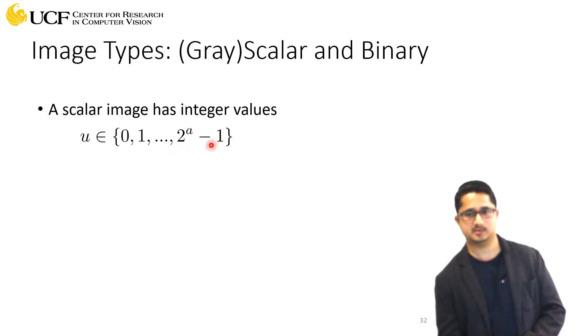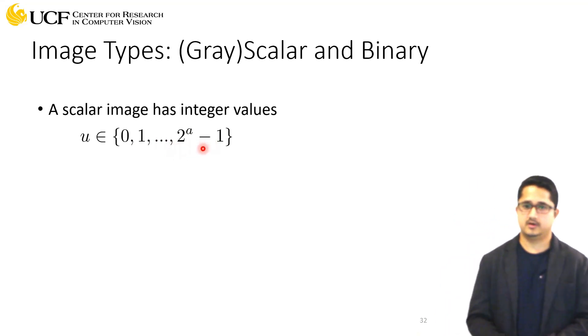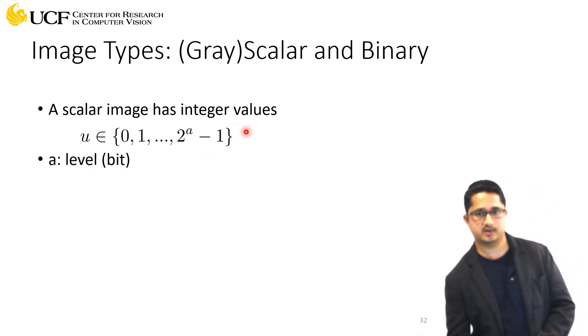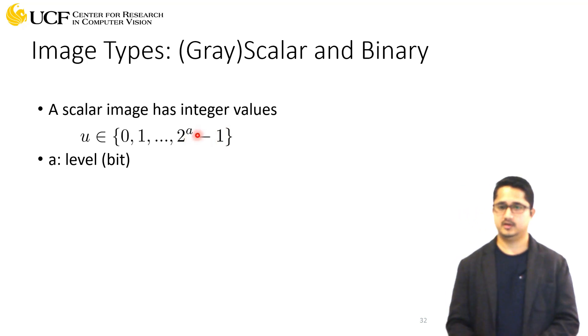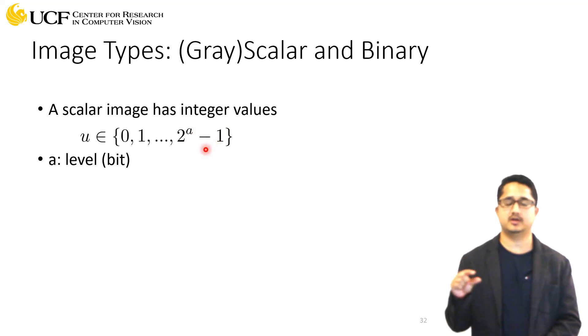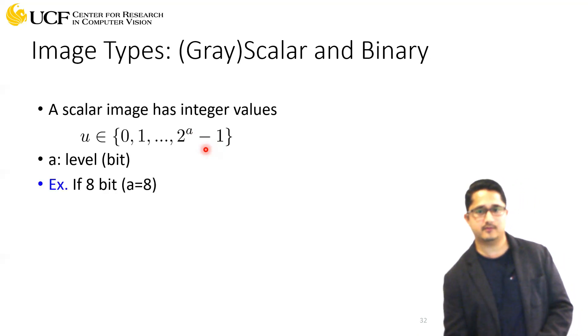This number. The 'a' superscript here is the bit level. For example, if your bit level is 16, it will be 2 raised to power 16 then minus 1. That will be the maximum number you can have in your image.